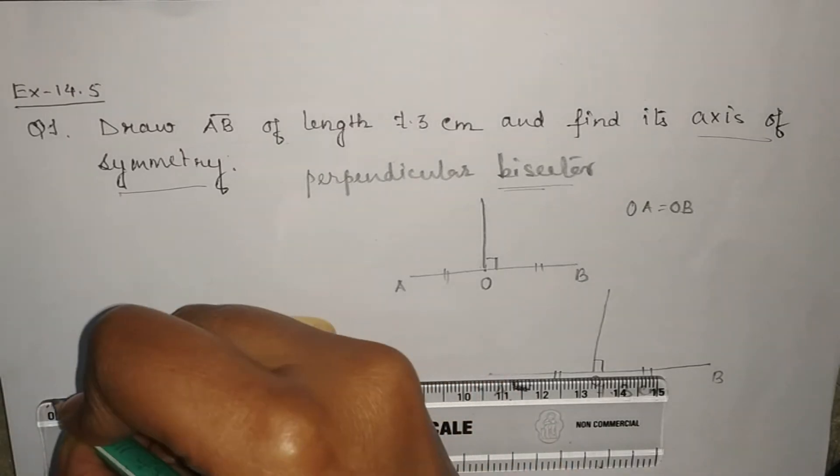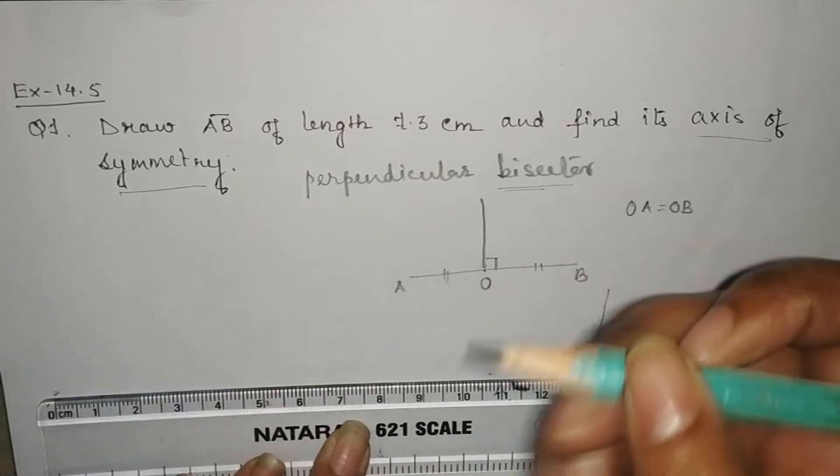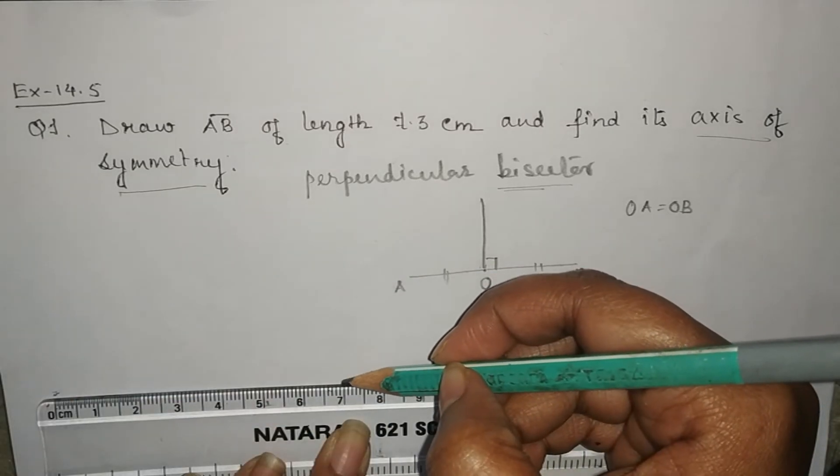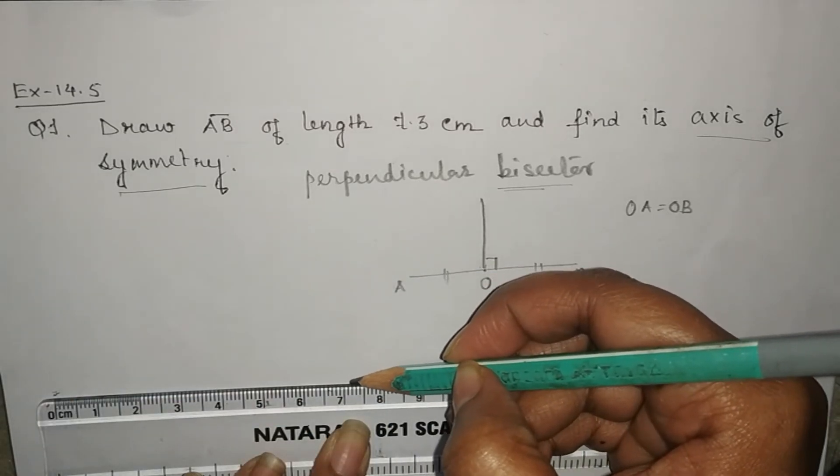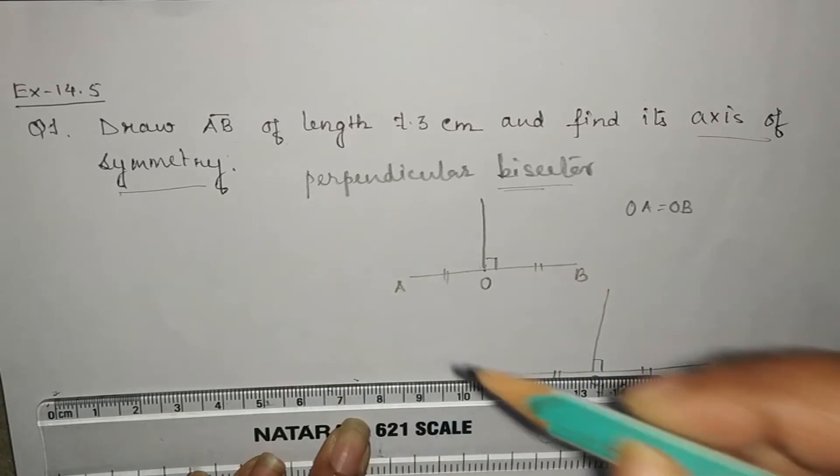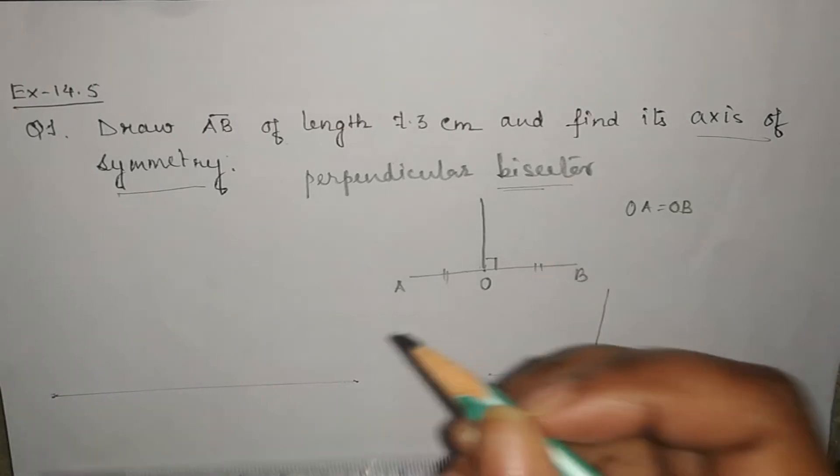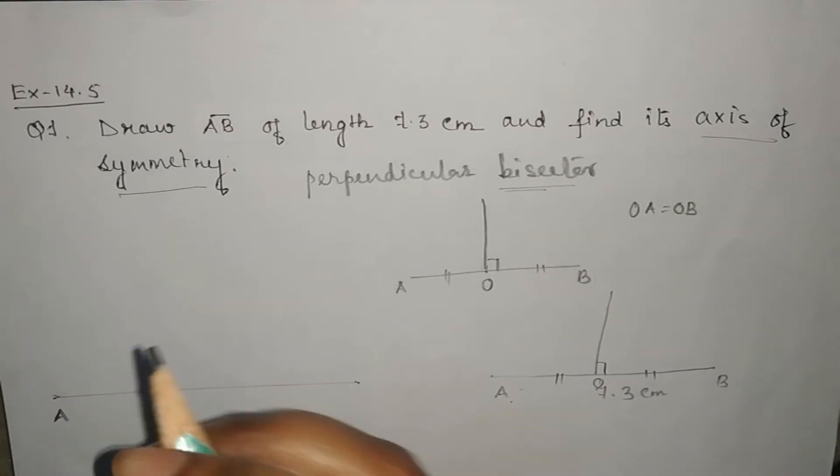So we will start from 0. We will put a point here at 0 and 7.3 is here: 7, then 7.1, 7.2, 7.3. So here we will put a point and then we will join these two points. So this is AB.